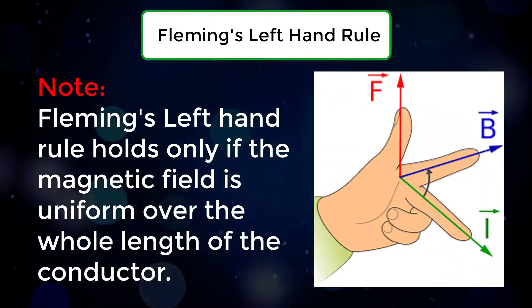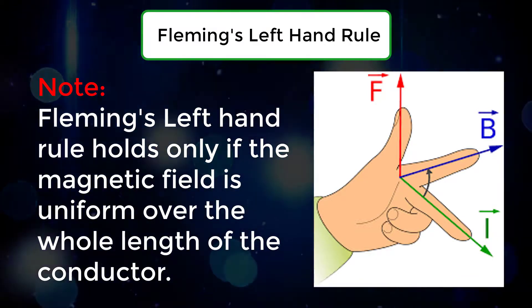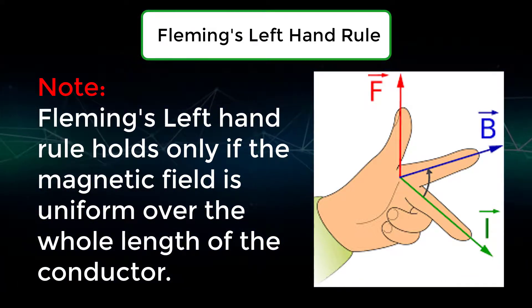Note: Fleming's left hand rule holds only if the magnetic field is uniform over the whole length of the conductor.